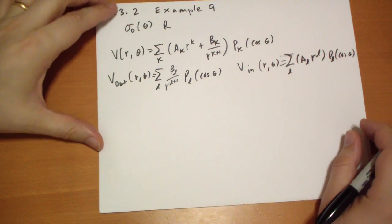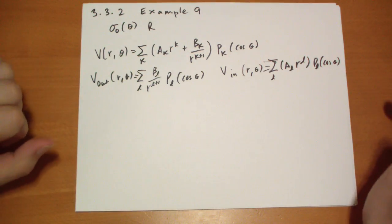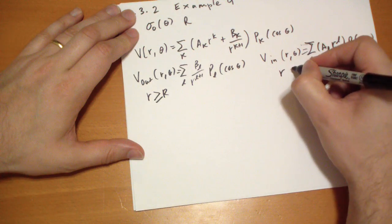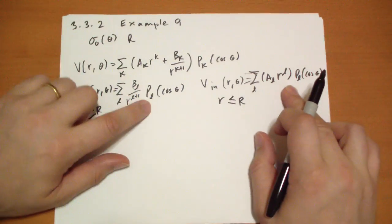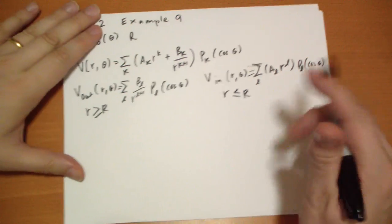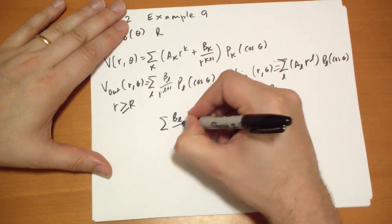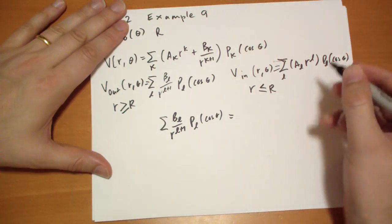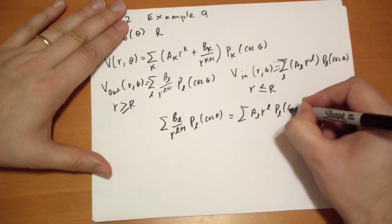One of the boundary conditions is that the potential must be continuous along the sphere, where R equals capital R. This is for R greater than or equal to capital R, this is for R less than or equal to capital R. When they're equal, these two terms have to equal each other. So we get the sum of B_L/(R^(L+1))*P_L(cos theta) equals the sum of A_L*R^L*P_L(cos theta).